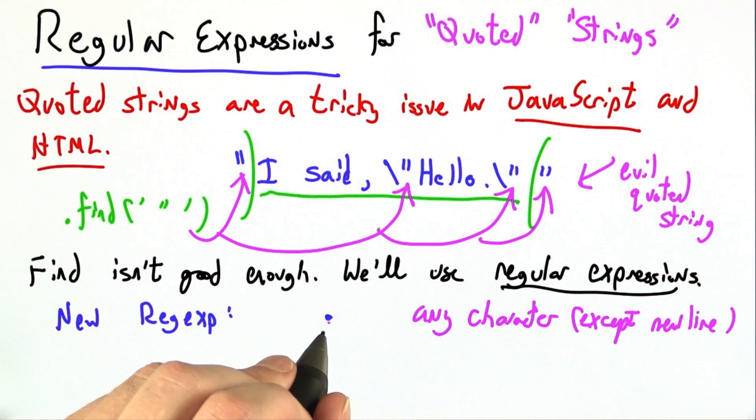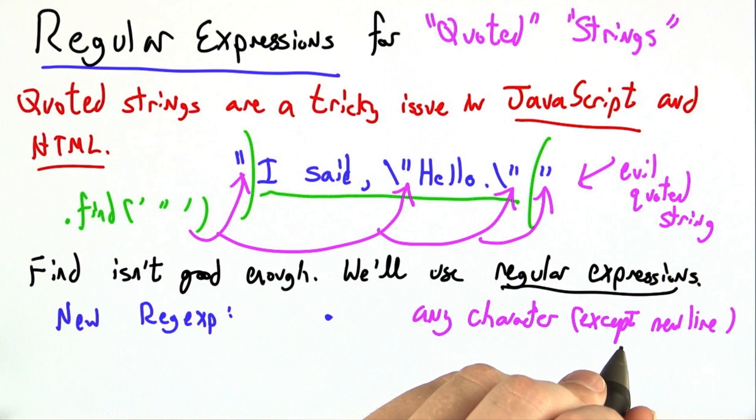The first is the dot or period, which matches any character except a new line, or what you get when you press Enter or Return.